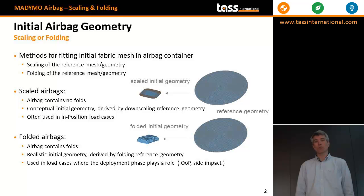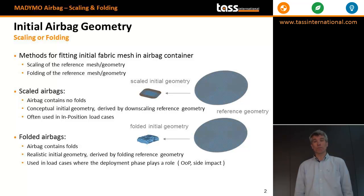Here you see two examples which probably already explain the difference between scaling and folding. The top two pictures are of a scaled airbag — it's a driver airbag. You have a large pancake about 16 to 65 centimeters in diameter, and it is scaled. The reason for scaling is because it has to fit within the steering rim. For a passenger airbag, it obviously has to fit within the inflator housing.